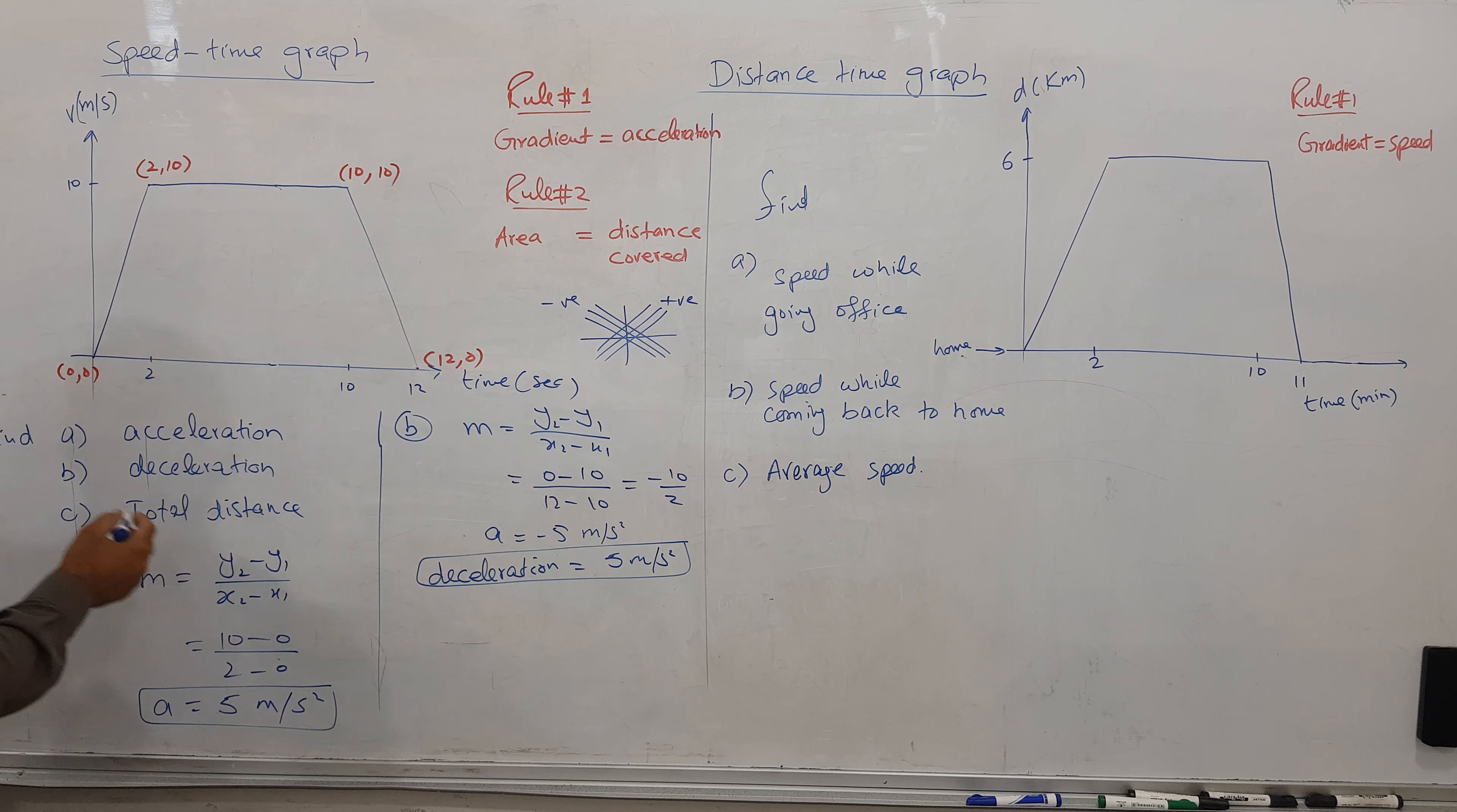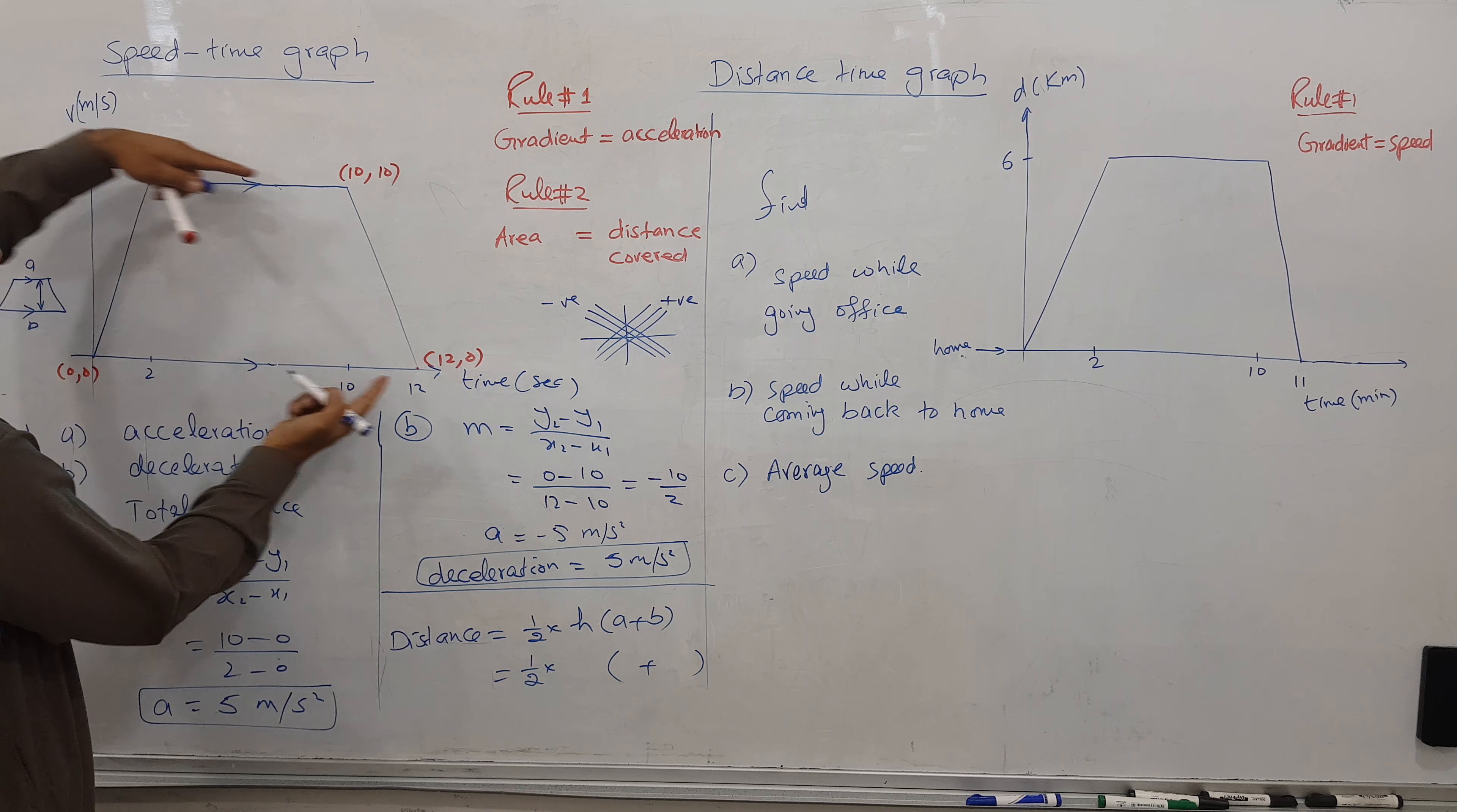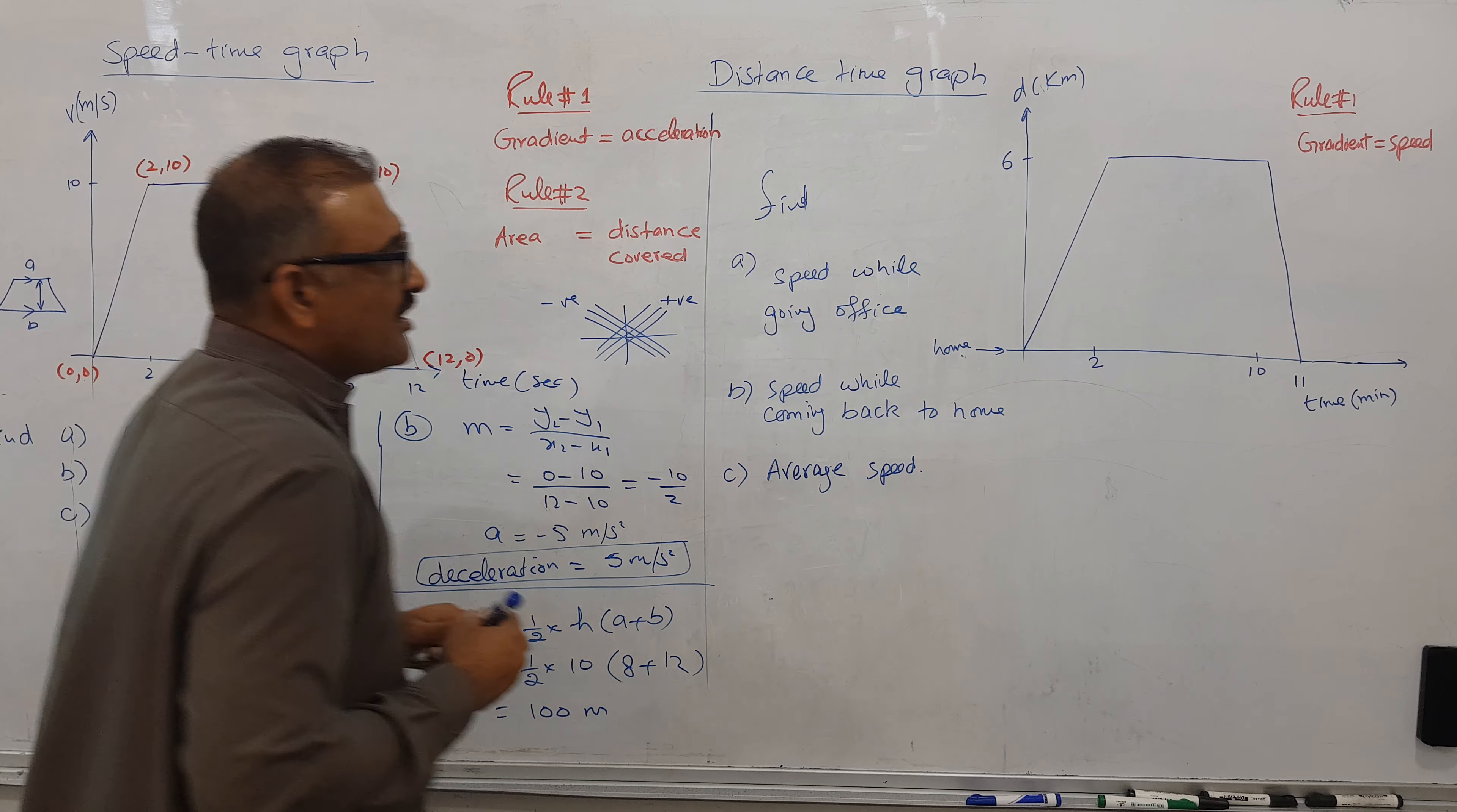The distance is the area. Total distance is the trapezium area. When we have a trapezium with sides A and B and height H, the formula is half into height into A plus B. Here, A is 8 (which is 10 minus 2), B is 12, and the height between them is 10. So half times 10 times (8 plus 12) equals 100 meters distance traveled.